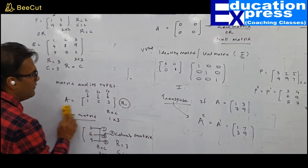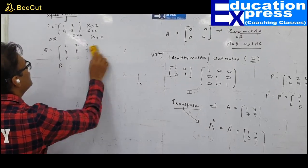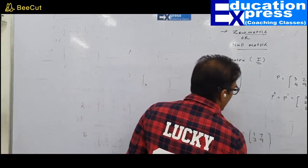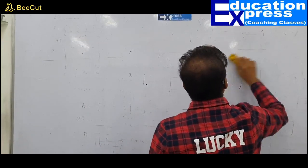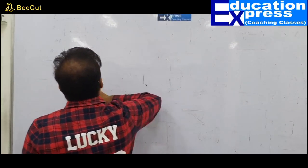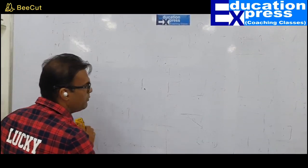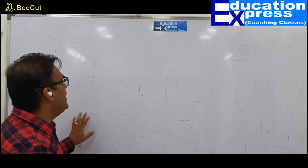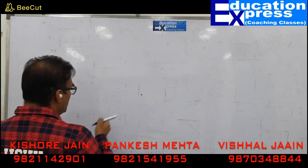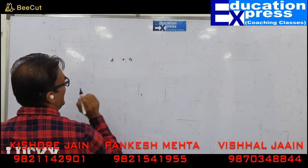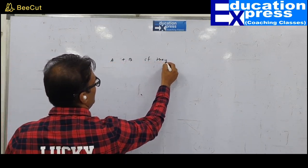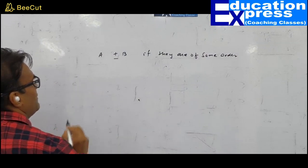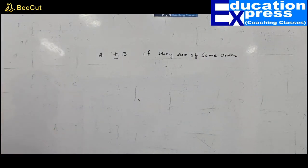Now let us look at some properties of matrices — what these matrices are capable of. Do they respond to each other? What about operations of addition, subtraction, multiplication, and division? As I told you, two matrices can be added or subtracted if they are of the same order.